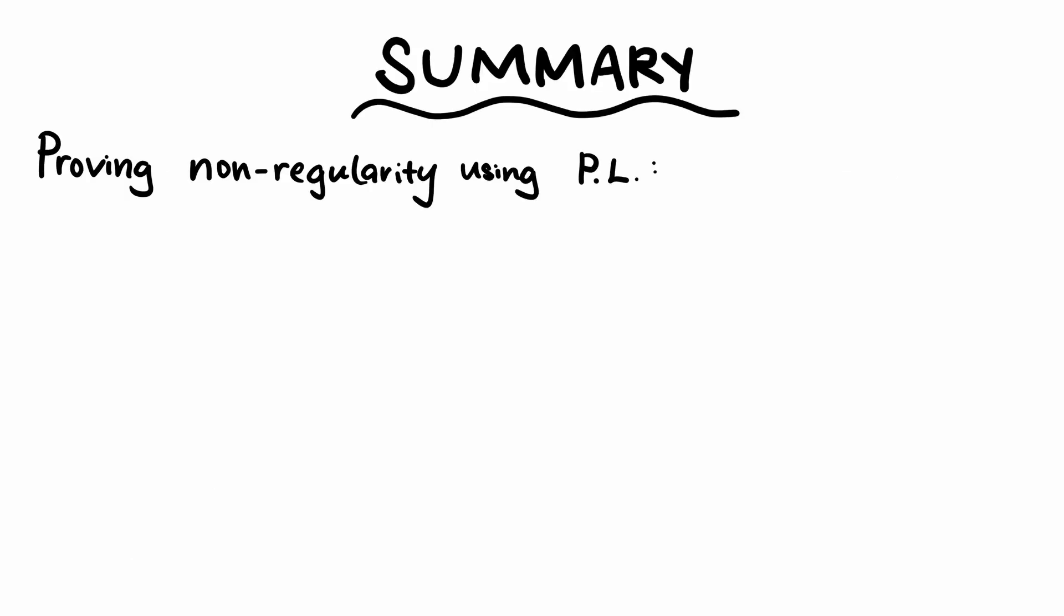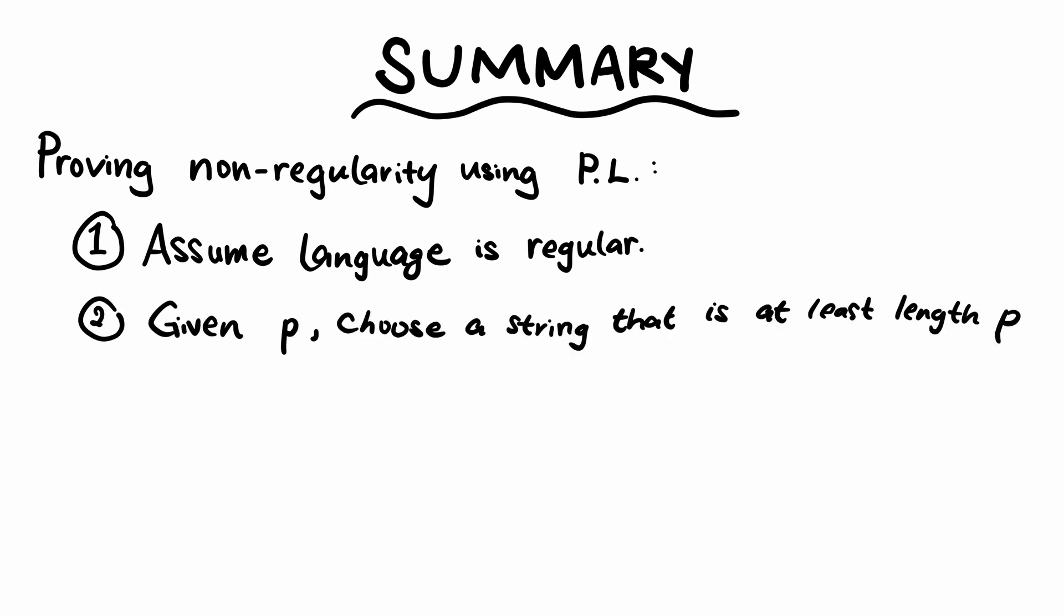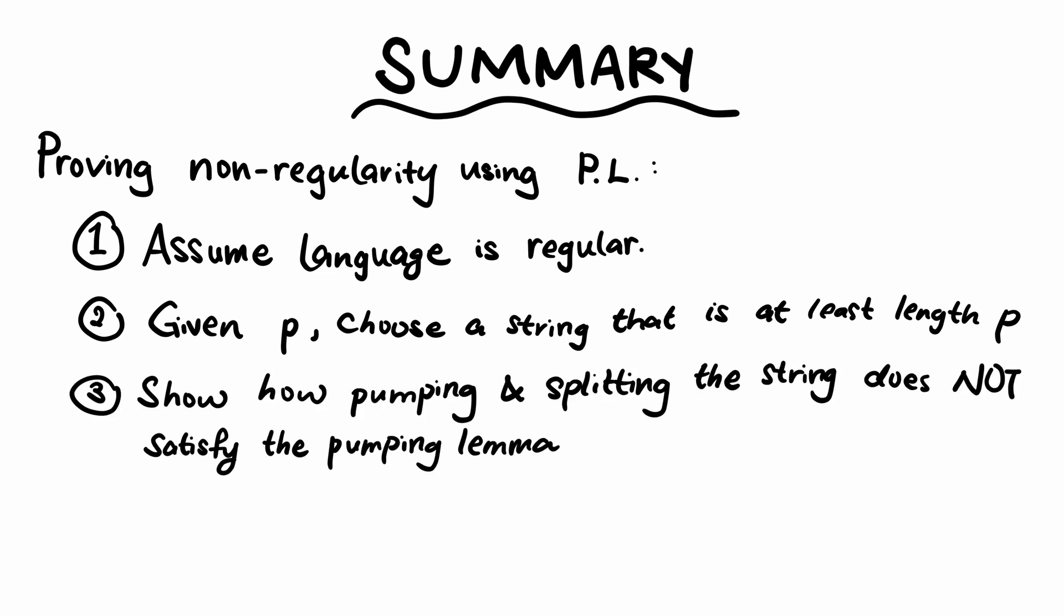In summary, we first assume that the language is regular. Then given p, we find a string that can't in fact be pumped. And then we show how splitting and pumping the string will result in a string that is not in the language, and therefore we contradict our initial assumption that the language is regular.